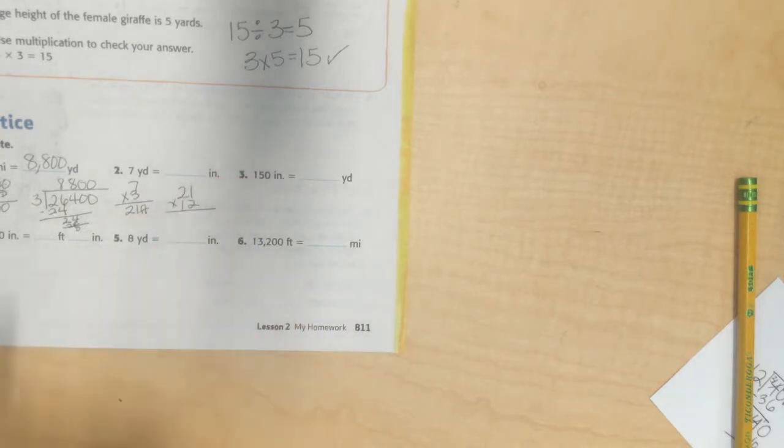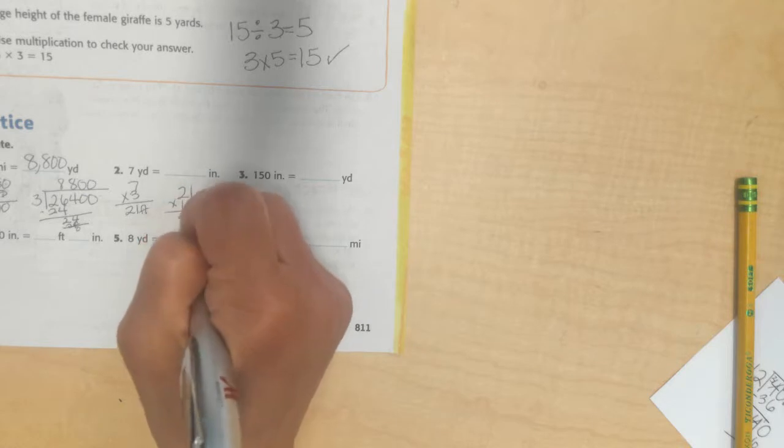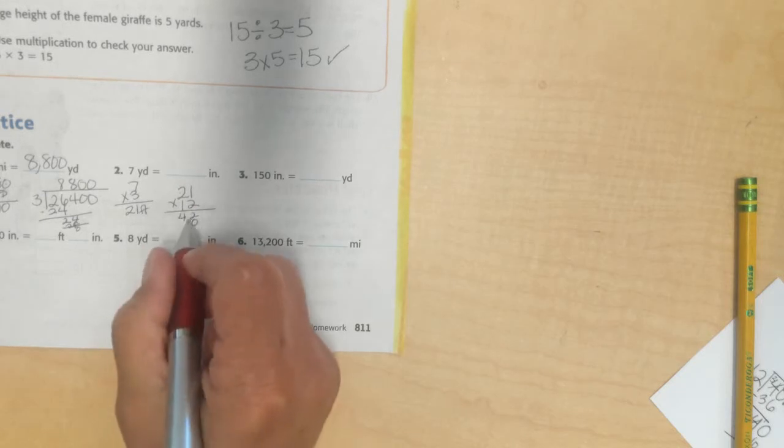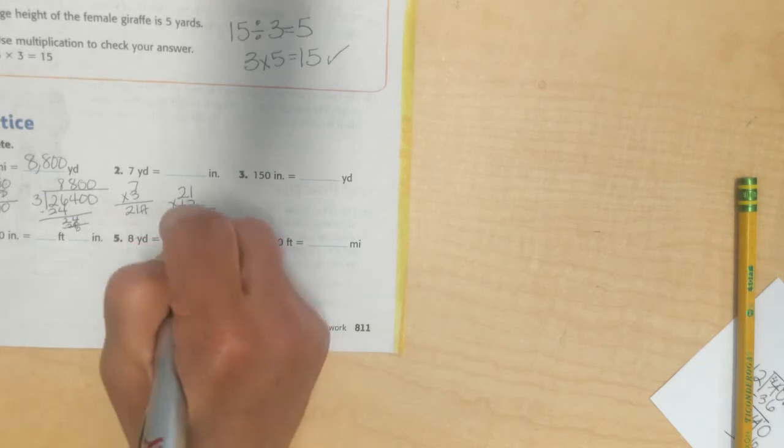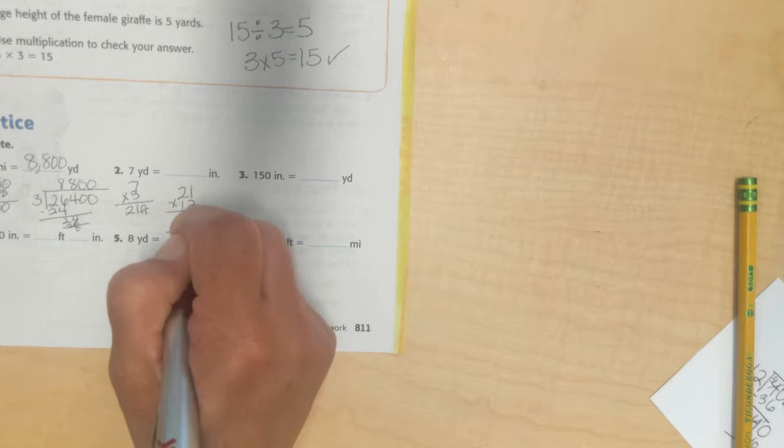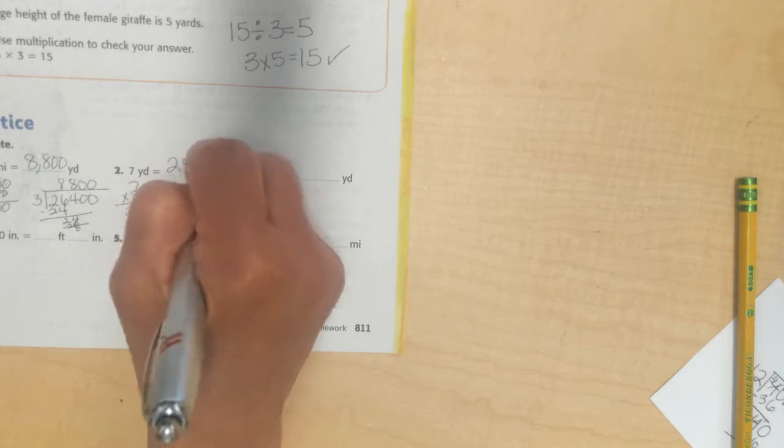And my 21 feet, I'm going to multiply it times 12 inches in each foot. If I have 21, I could just keep adding 12 plus 12 plus 12, or multiply. 1 times 2 is 2. 2 times 2 is 4. I'm going to put a 0 to hold my place here. I'm writing small so I can fit it in this space. 1 times 1 is 1. 2 times 1 is 2. I'll add them together. 2 plus 0 is 2. 4 plus 1 is 5. So, my final answer is 252 inches.